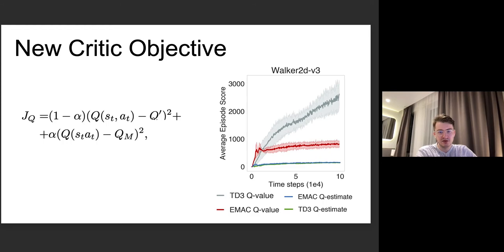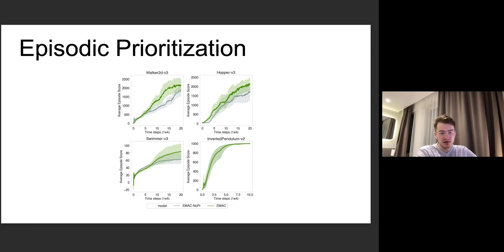Here, we retrieve Monte Carlo returns from the memory for the given state-action pair. The corresponding returns are more pessimistic than the critic prediction. Thus, it helps us to alleviate Q-value overestimation. We show that EMAC has less overestimation bias than, for example, TD3 algorithm.